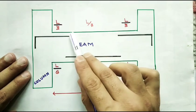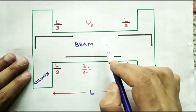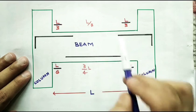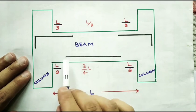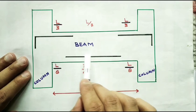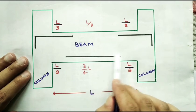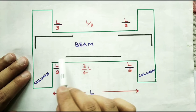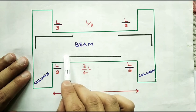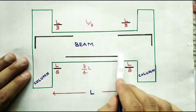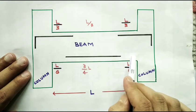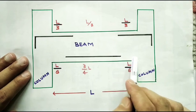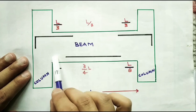So why do we cut? I will explain this figure. In the lower section, what we have done is cut the bar at L by 8 from the left side and the right side. So why do we cut?